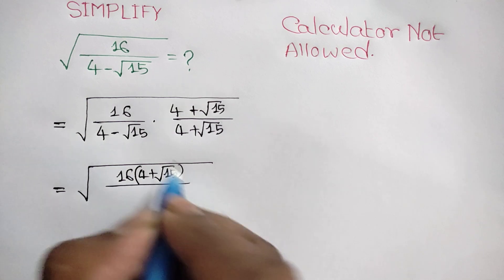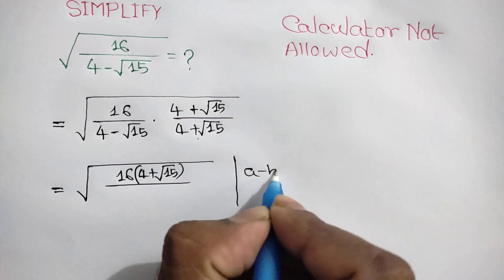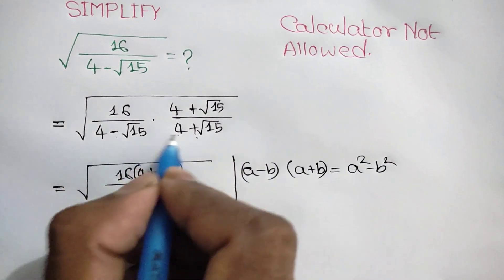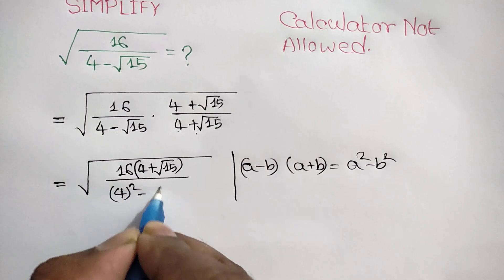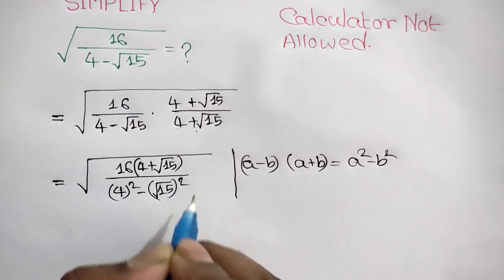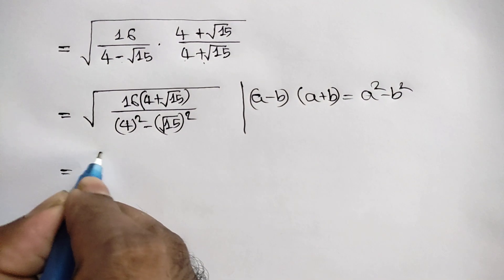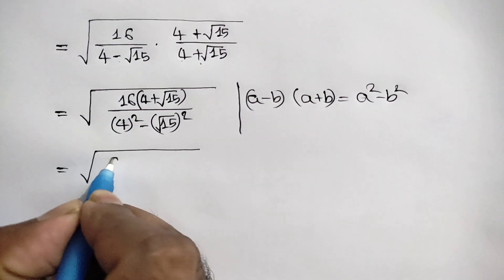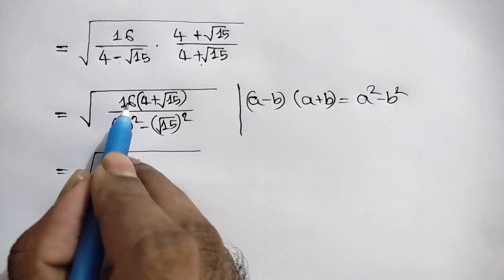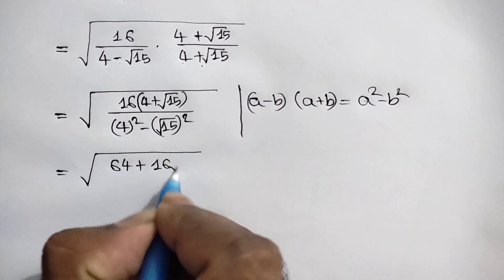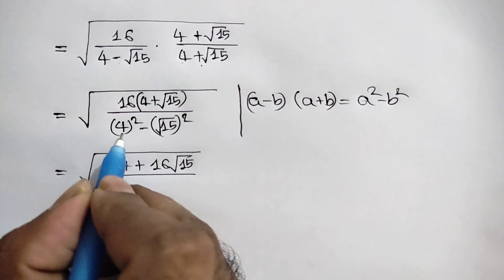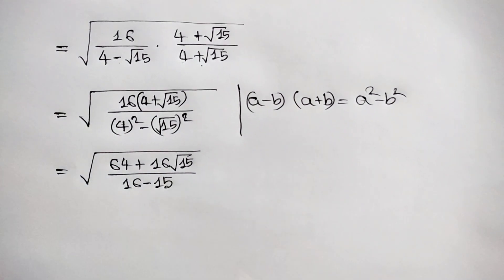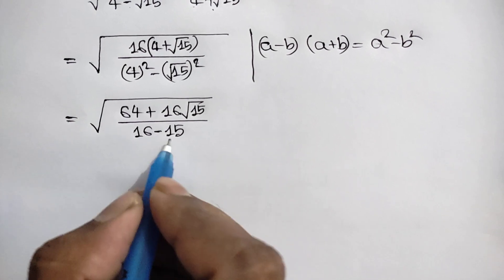We know that (a minus b)(a plus b) equals a squared minus b squared, so we apply this rule here. We get square root of 16 times (4 plus square root of 15) over (4 squared minus square root of 15 squared). That gives 16 minus 15, which equals 1.